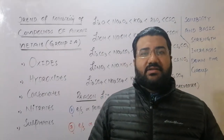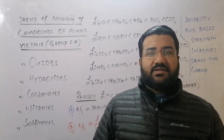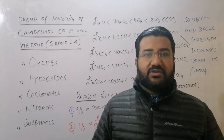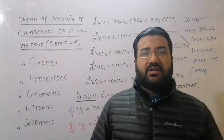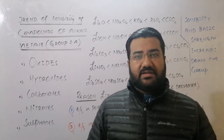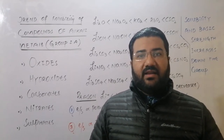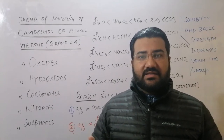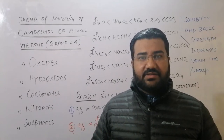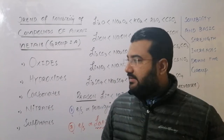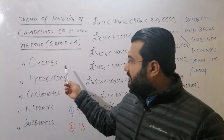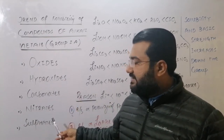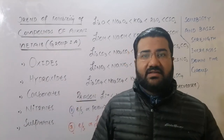Welcome, dear students. In this lecture we are going to talk about the trends in the solubility of the compounds of the alkali metals. The compounds we will discuss with respect to their solubility are oxides, hydroxides, carbonates, nitrates, and sulfates.